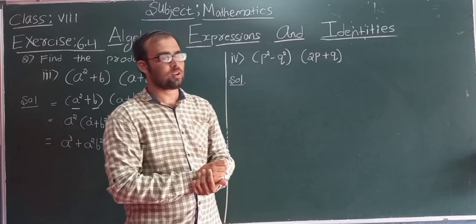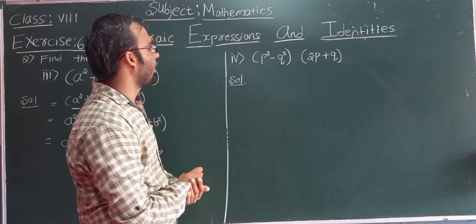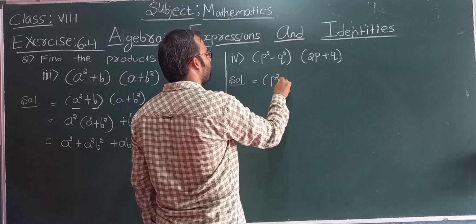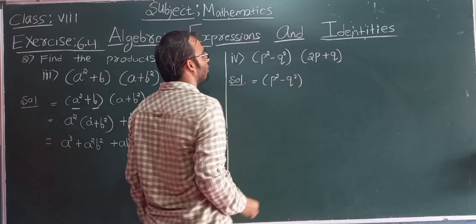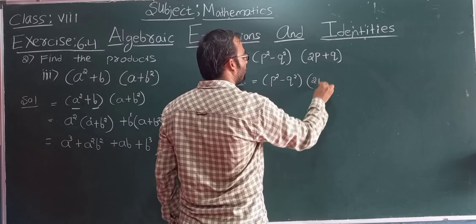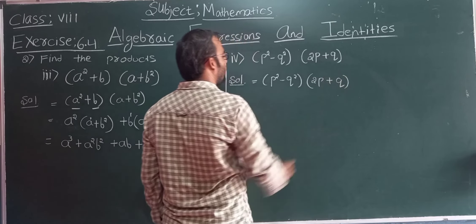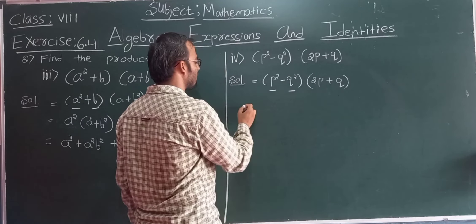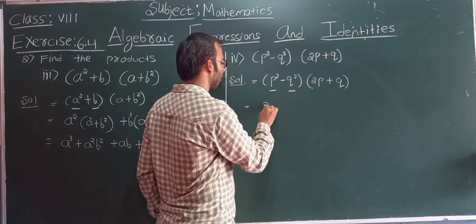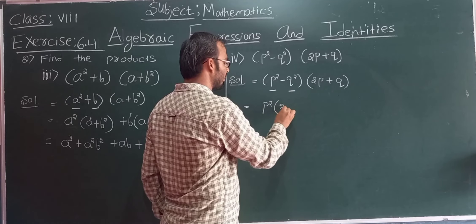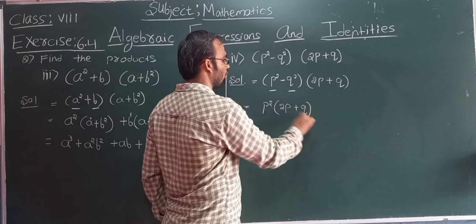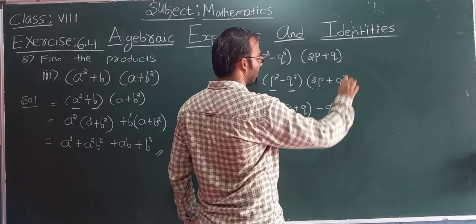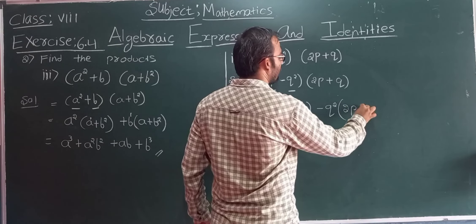Now we solve the fourth question: (p squared minus q squared) into (2p plus q). Write it as (p squared minus q squared) into (2p plus q). I will divide the first binomial into two parts and keep (2p plus q) as it is. Write p squared into (2p plus q), then minus q squared into (2p plus q).